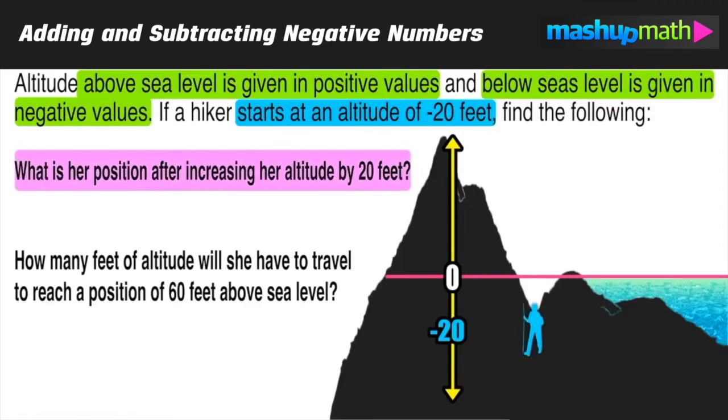So now we want to find out what is her position after increasing her altitude by 20 feet. She starts at negative 20 and she's increasing, she's hiking upwards in altitude. We know that negative 20 plus 20 would just be zero, so that's going to bring her right back to sea level. So we can say that her position would be zero feet above sea level.